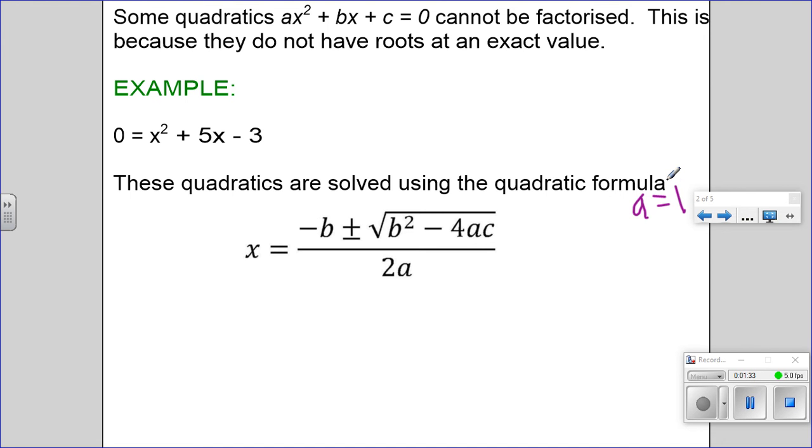For my b value, b is 5, and my c value is negative 3. Now these three values get substituted into my equation so I get -5 ± √(5² - 4 × 1 × -3) all divided by 2 × 1.